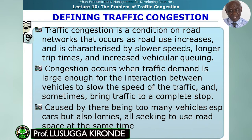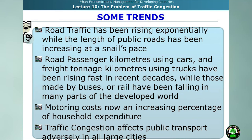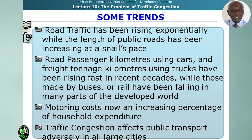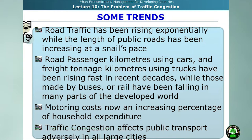The cause is mainly too many vehicles, especially cars, all seeking to use road space at the same time. Road traffic has been rising exponentially while the length of public roads has been increasing at a slower pace. Road passenger kilometres using cars and freight kilometres using trucks have been rising fast in recent decades, while those made by buses have been falling in many parts of the developed world. Motoring costs are an increasing percentage of household expenditure and traffic congestion affects public transport adversely in all large cities.